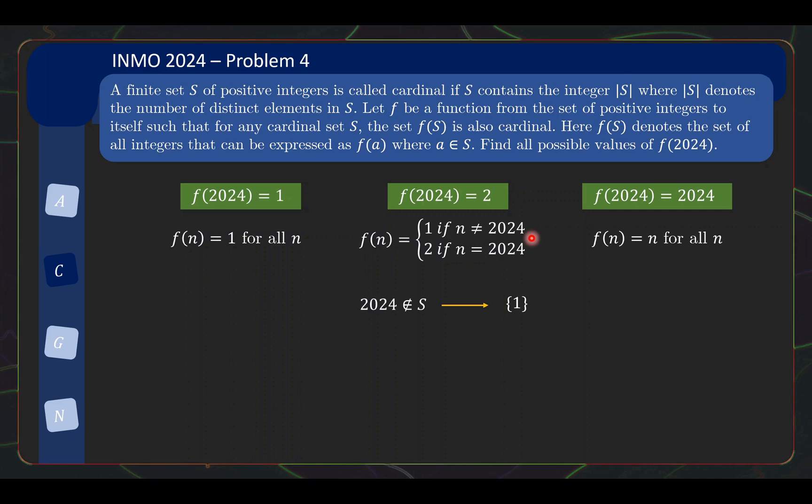Well, we consider two scenarios. If 2024 is not in the cardinal set S, then because everything maps to 1, we will end up with the set with just the element 1 and this is cardinal. On the other hand, if 2024 is in the set S, the clever thing is 2024 by itself cannot make the set cardinal. So if S is cardinal and it contains 2024, it must obviously contain some other elements as well. And if it contains some other elements, then those other elements get mapped to the number 1, whereas 2024 gets mapped to the number 2. And so the set {1, 2} is indeed cardinal and this concludes the proof that F here is valid.